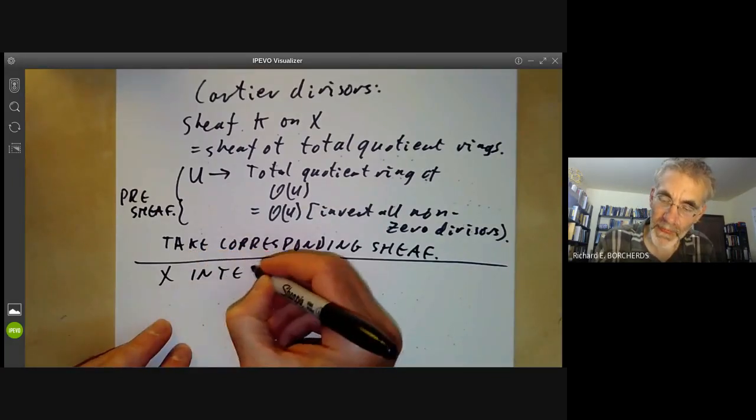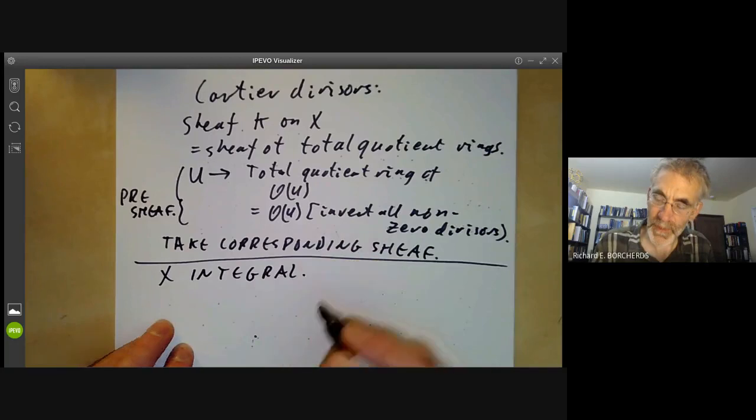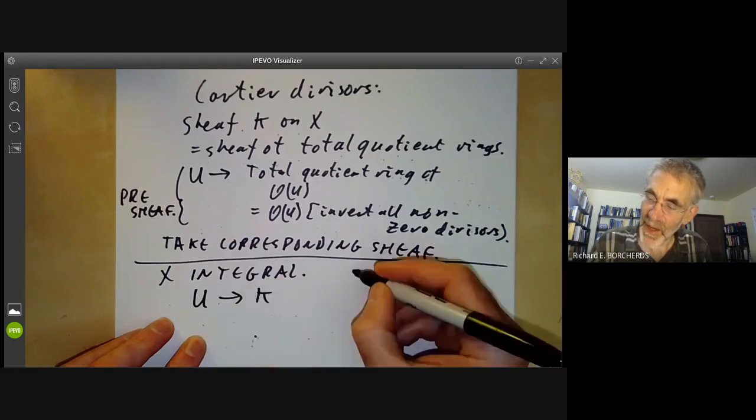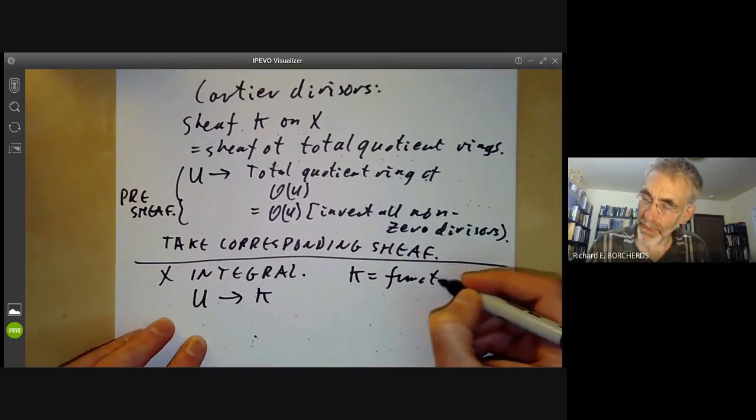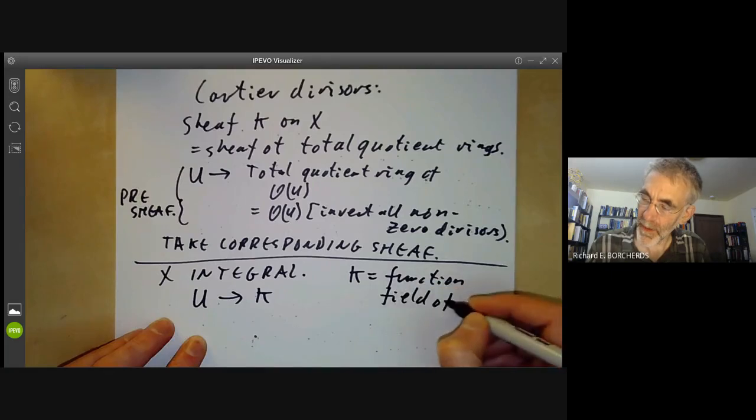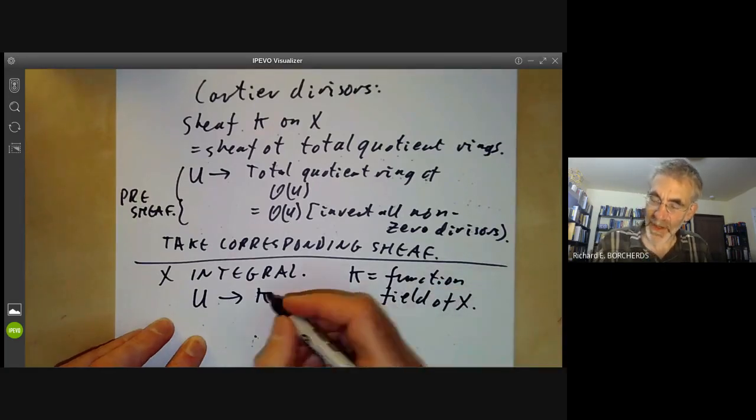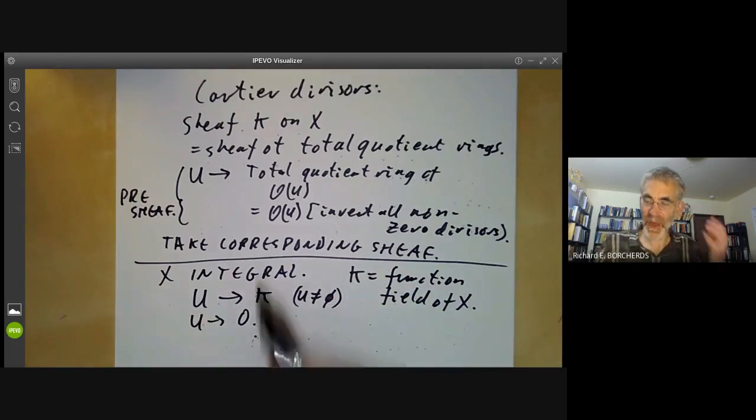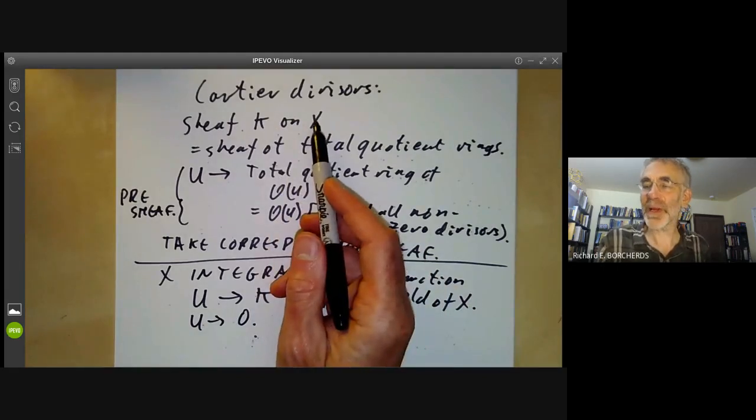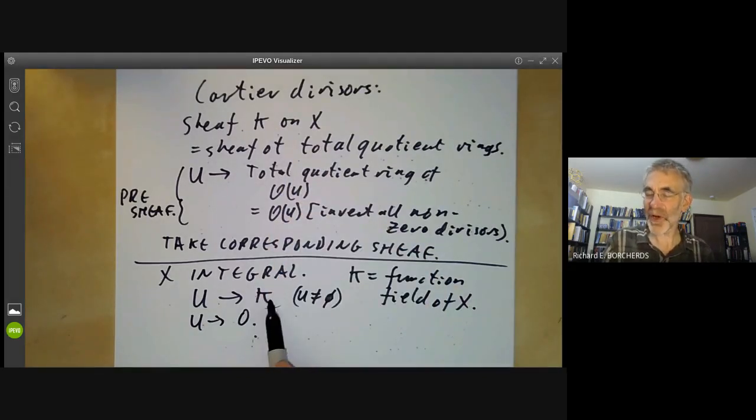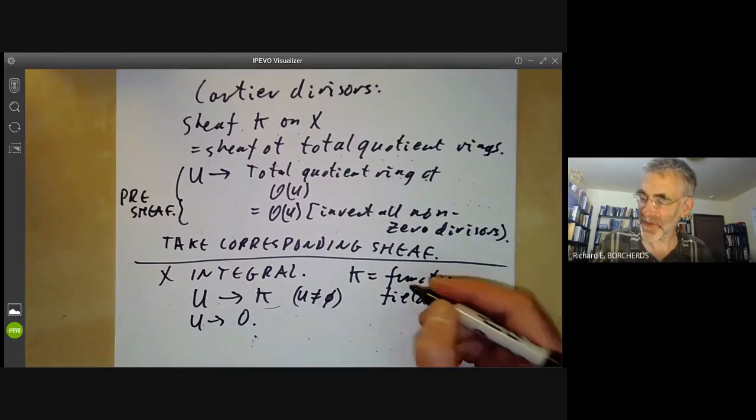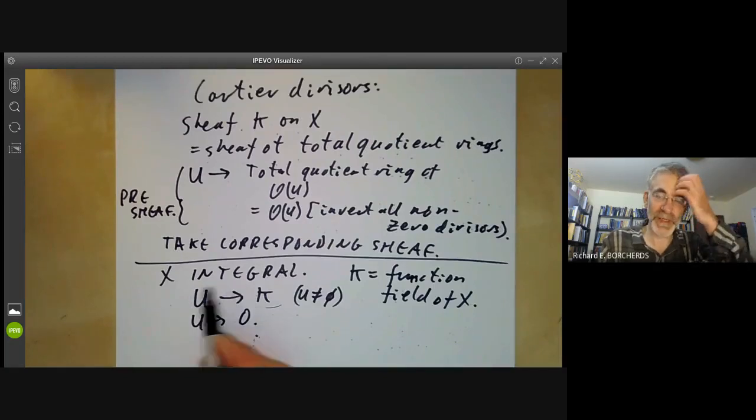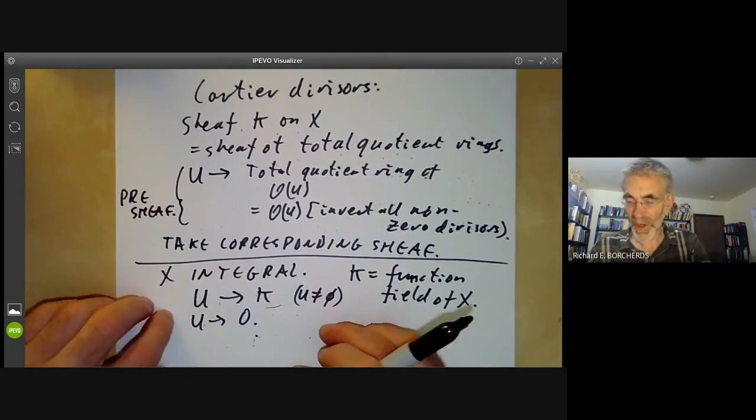Suppose X is integral. Then all we're doing is taking each open set U to K, where K is the function field of X. This is for U not equal to the empty set; for the empty set, we just take U to zero. So this apparently complicated sheaf is in practice just a complicated way of specifying the function field of X, at least when X is integral. You need this more complicated construction if you want to look at Cartier divisors of non-integral schemes.